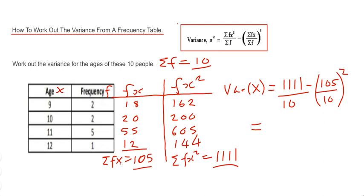So we've got 1111 divided by 10, minus 105 over 10 squared, and we get an answer of 0.85. So that is our variance for the ages of the 10 people in the table.